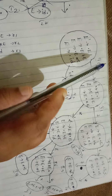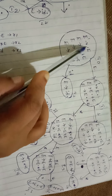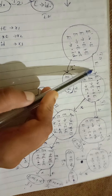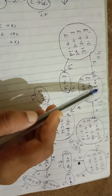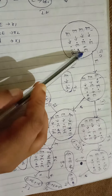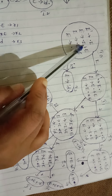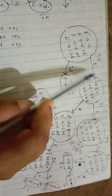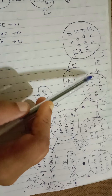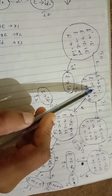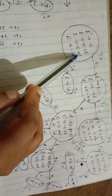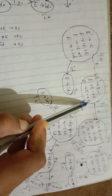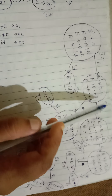From i0 on symbol E, we shift the dot to get state i1, which contains: E' → E•, E → E• plus E, and E → E• star E. From i0 on symbol id, we get state i2: E → id•.